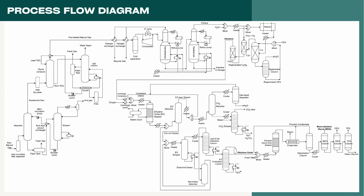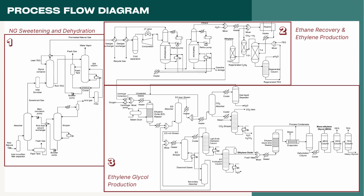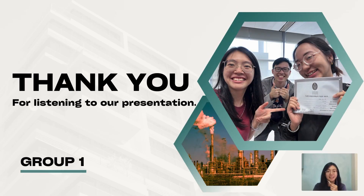This process flow diagram comprehensively illustrates all the discussed processes in this presentation. The process starts with wet gas sweetening and dehydration, followed by ethylene recovery and ethylene production, and finally concludes with ethylene glycol production. That's the end of our presentation. Thank you for listening and have a nice day.